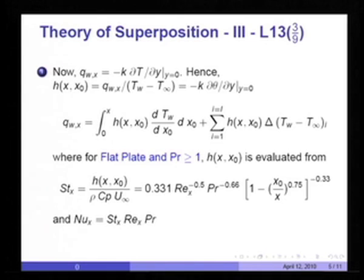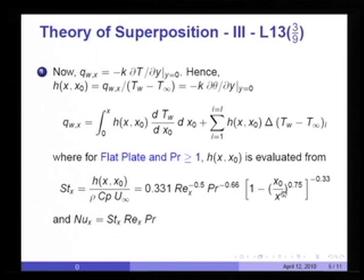For a flat plate, h(x, x_naught) = rho * Cp * u_infinity * 0.331 * Re_x^(-0.5) * Pr^(-0.6) * [1 - (x_naught/x)^0.75]^(-0.33), and so on. So I can now get, for a given wall temperature variation, the response of the heat flux as a function of x. Once I know the heat flux, I simply divide by the local value of (Tw - T_infinity) to get the heat transfer coefficient variation over the entire surface.